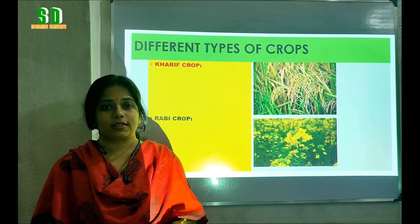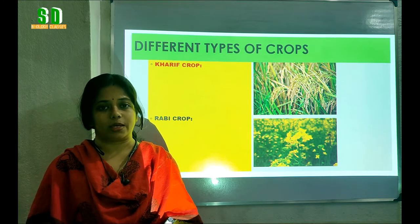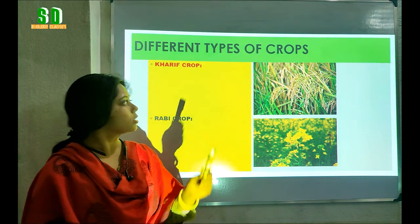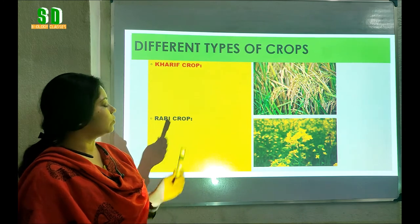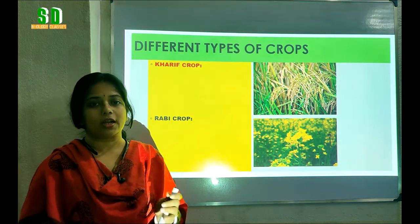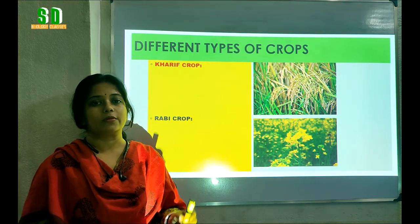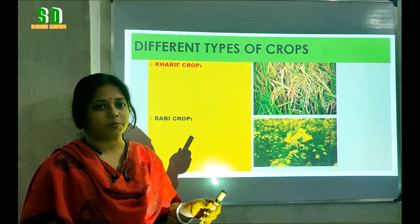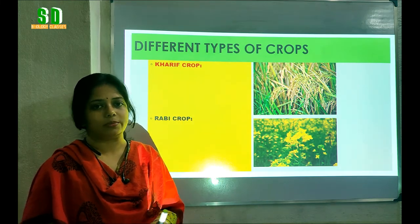Depending on the season there are two different types of crops. One is the Kharif crop and another one is the Rabi crop. Now we are going to learn about the features of the Kharif crop and the features of the Rabi crop.